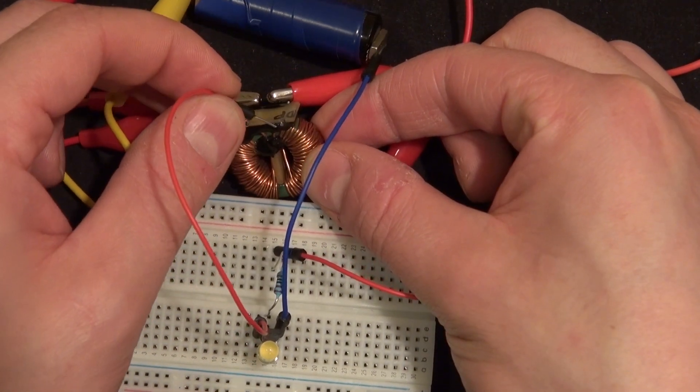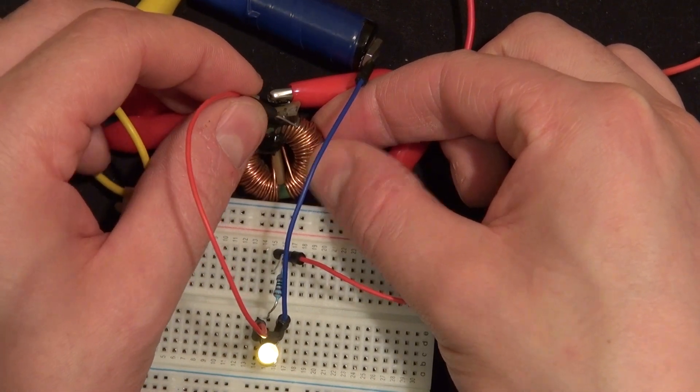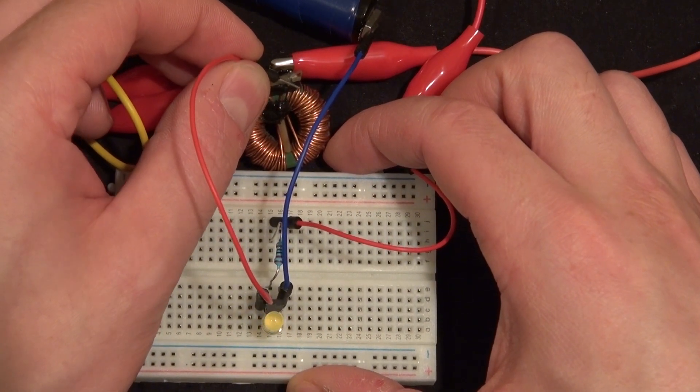Now let's go ahead and test it out. Oh, and there you have it. It works. So a toroid core inductor can easily work as a joule thief.